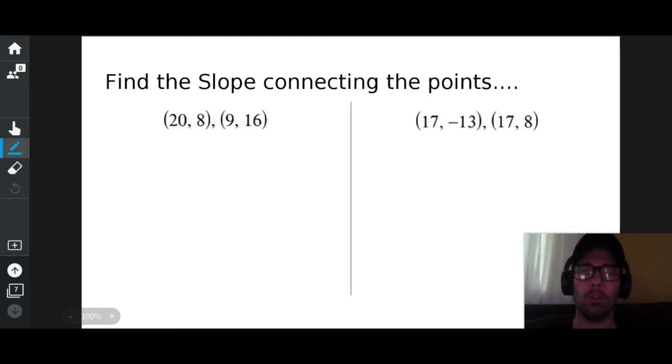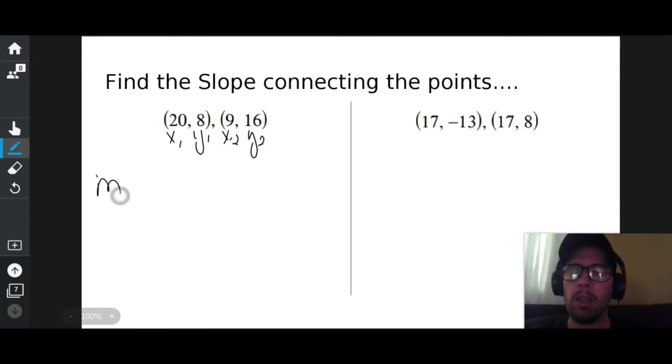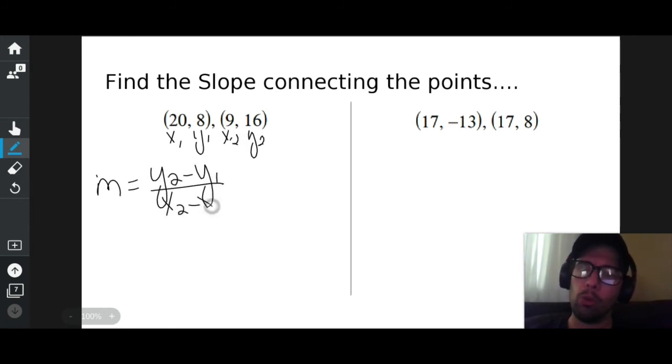Let's do 2 more. Speaking of 2. Find the slope connecting the points. All right. I'm going to call you x sub 1, y sub 1. And I'm going to call you x sub 2, y sub 2. I'm going to write out my slope formula. M equals y sub 2 minus y sub 1.